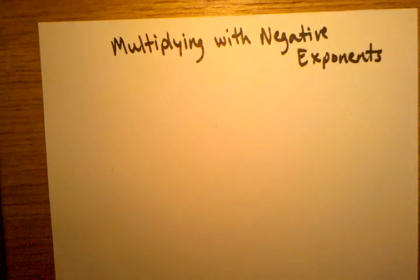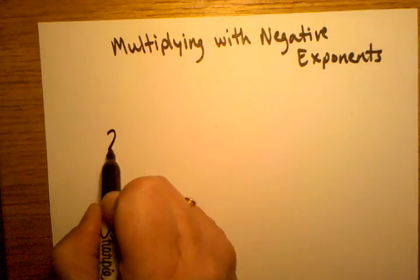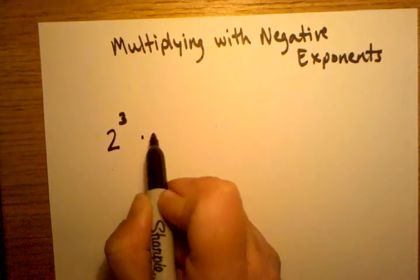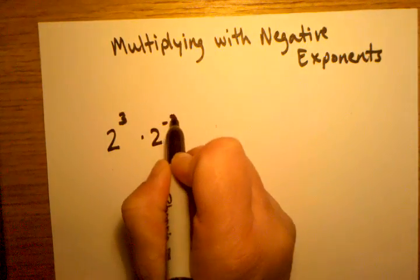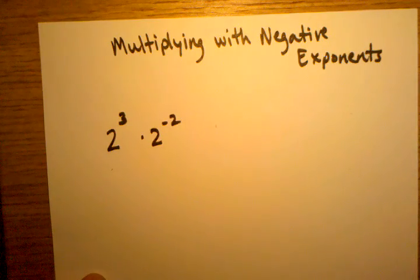Now let's talk about what we would do when we're multiplying numbers that are taken to a power when the power happens to be negative.